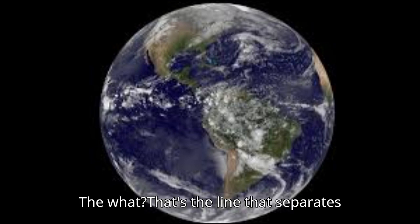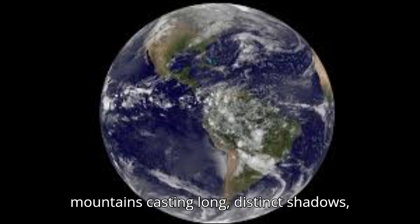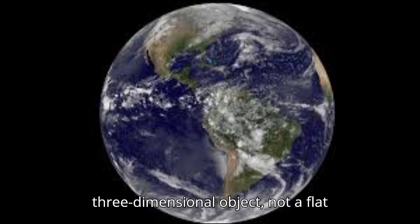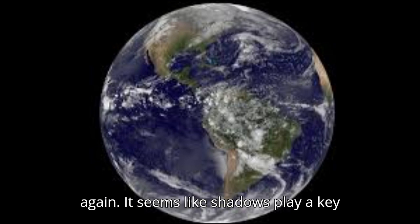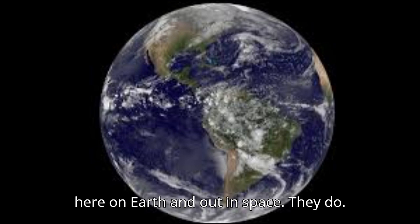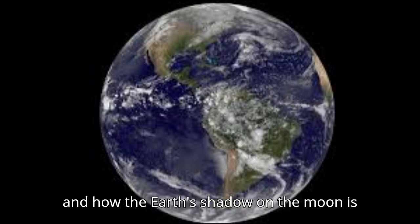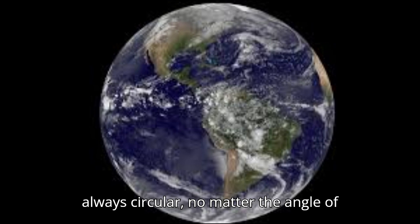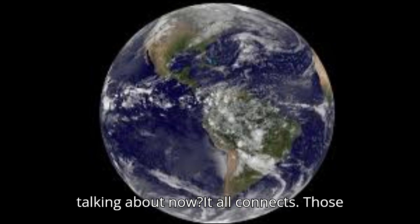That's a beautiful way to put it. And if you ever need a little extra convincing that the moon is indeed a sphere, grab a pair of binoculars or a telescope and take a closer look. Observe the terminator—the line that separates the illuminated part of the moon from the dark side. You'll see craters and mountains casting long, distinct shadows, proving that the moon is a three-dimensional object, not a flat disk.